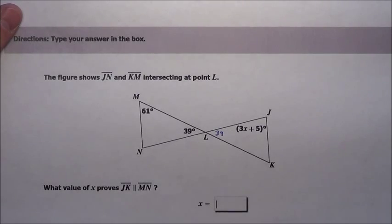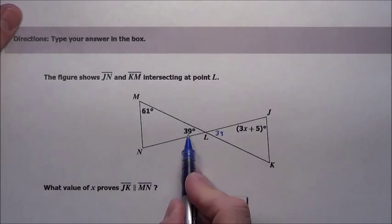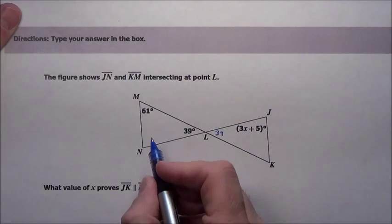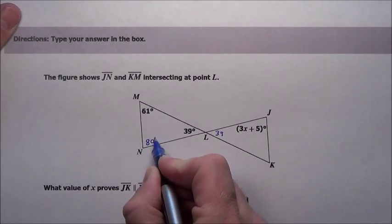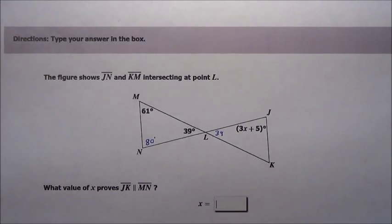Now, what we know, well let's see, if that's 61 and 39, that adds up to what, 100? So that makes this angle right here 80. That was nice of them to make it add up to 100. So we know all the measurements here.